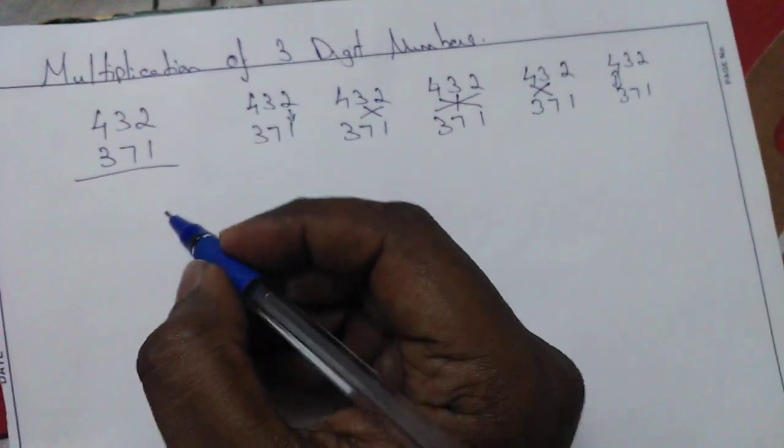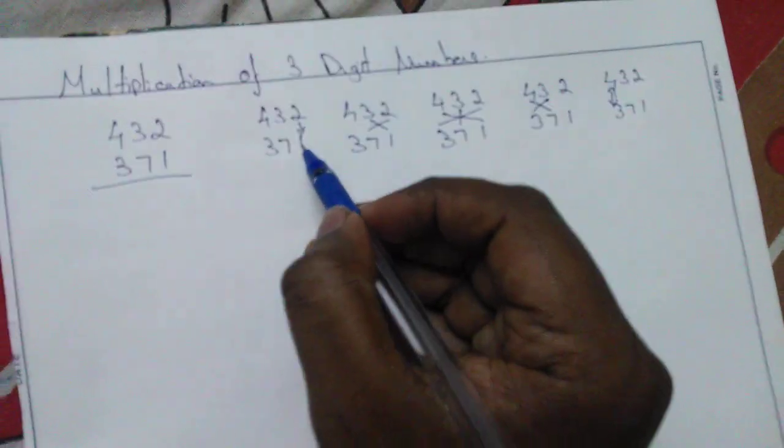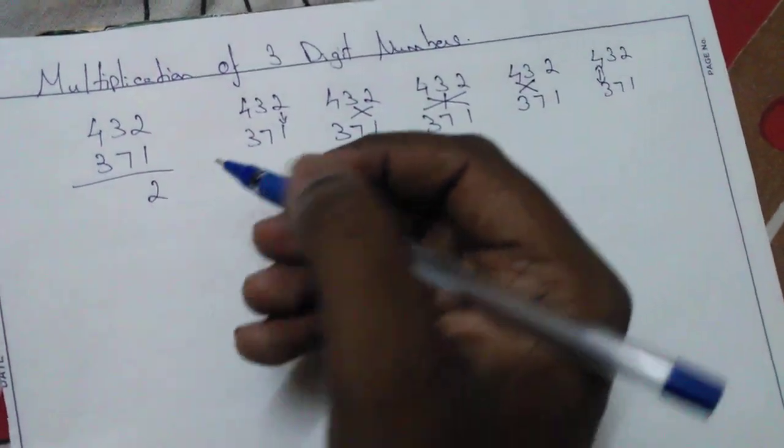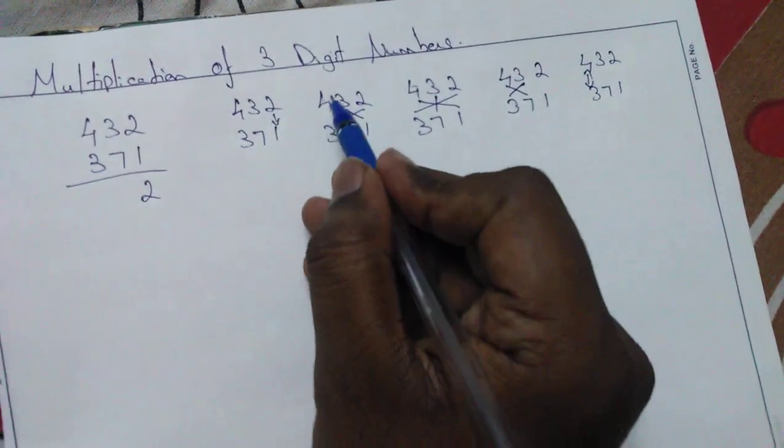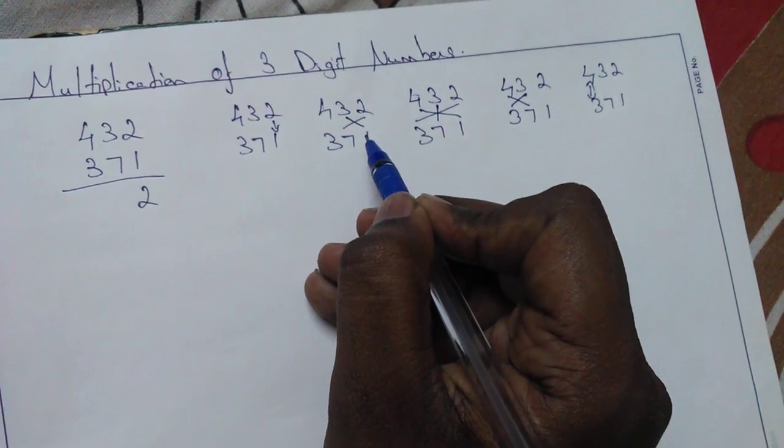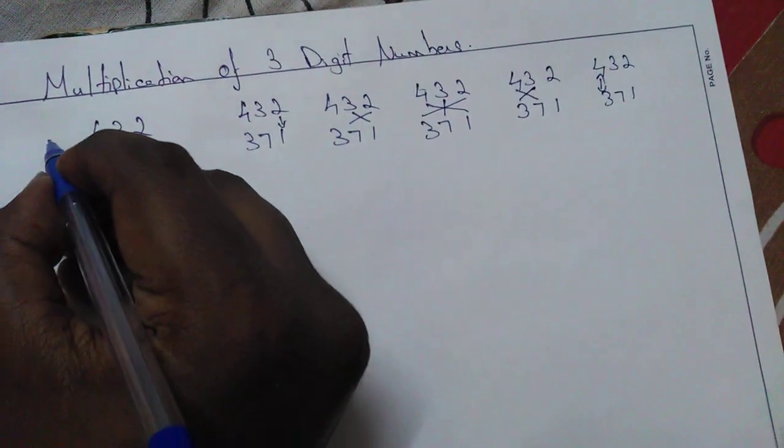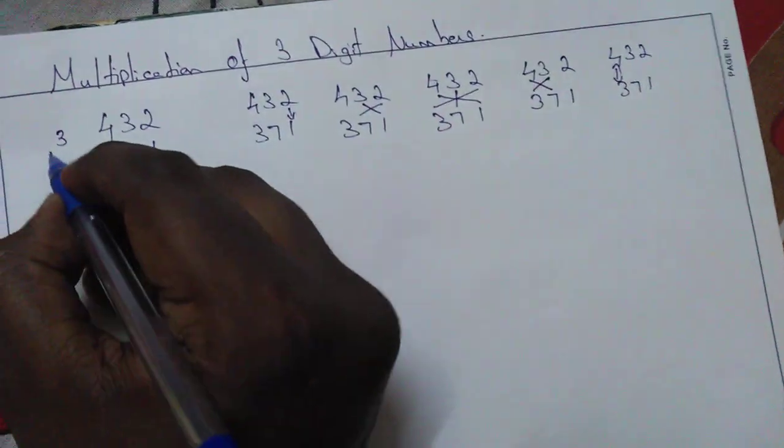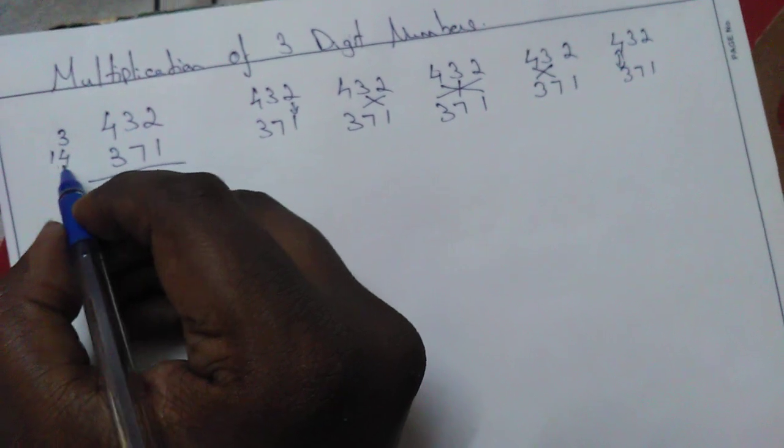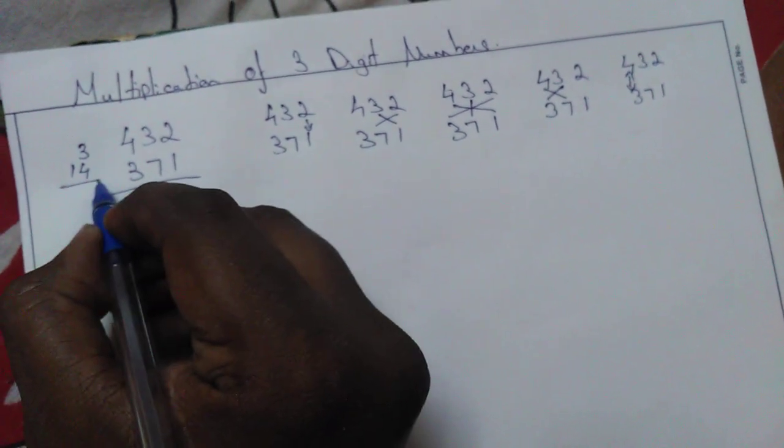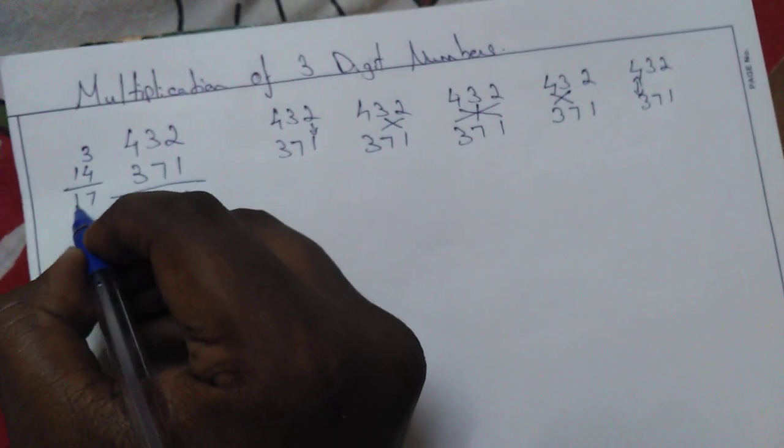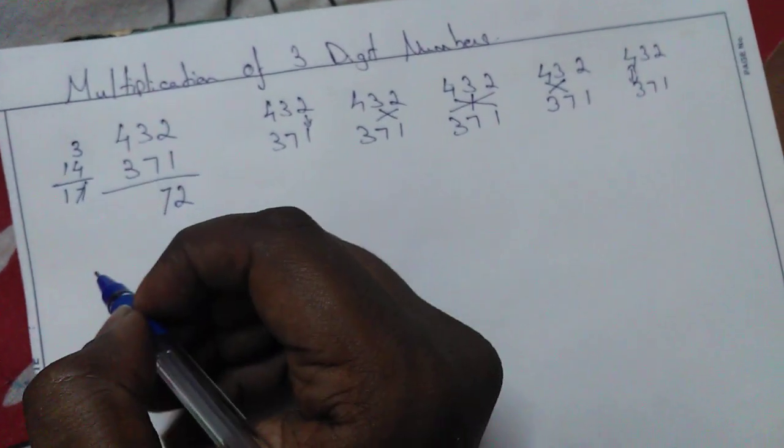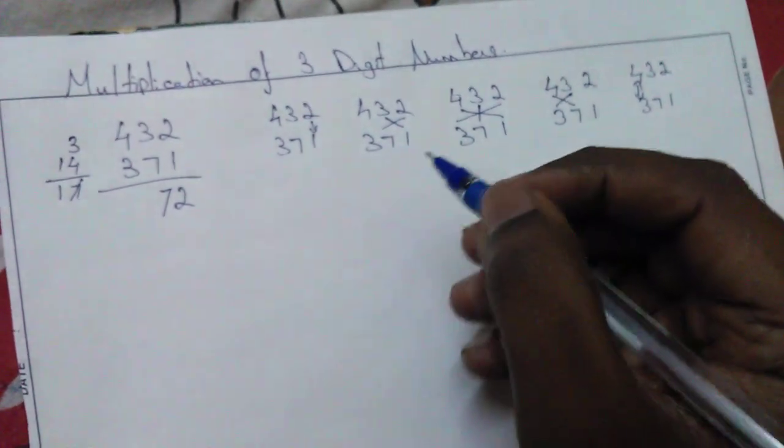Let's see how we can apply this. First you need to multiply 2 into 1, which is 2. Next method: 3 into 1 is 3, 7 into 2 is 14. If we add we get 7 with 1 remainder. Let's put 7 here and keep the remainder 1.